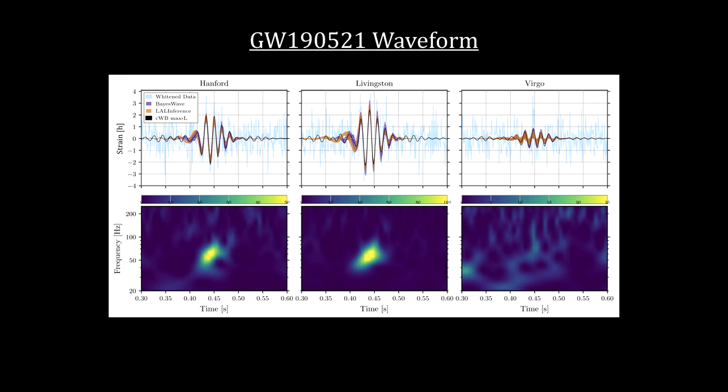The signal was of a shorter duration and peaked at lower frequency than any other binary black hole merger observed to date, indicating that it was going to be the most massive inspiral ever detected. The inspiral frequencies were so low that they were out of the sensitivity range for the LIGO detectors.